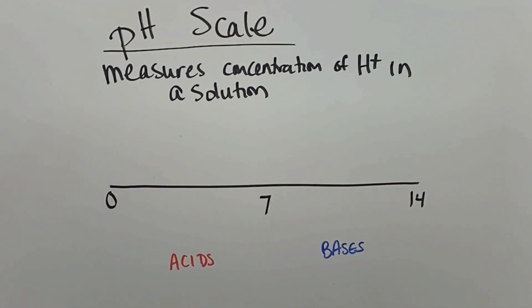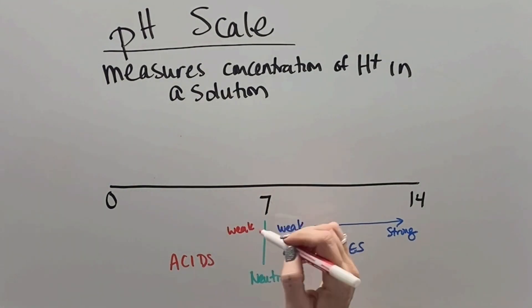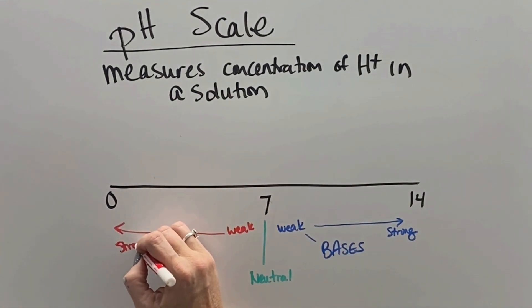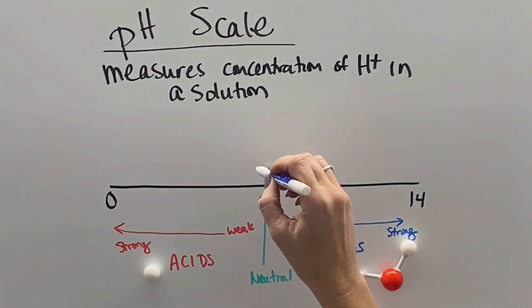We measure how strong an acid or a base is on a scale called the pH scale. It goes from 0 to 14 with neutral in the middle. Bases are numbers higher than 7. Acids are numbers lower than 7. The weaker bases are closer to 7, and the farther away you get from 7, the stronger it is. And the same thing with the acids. The farther away you get from 7, the stronger it is.